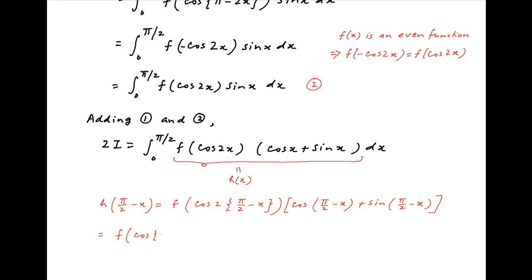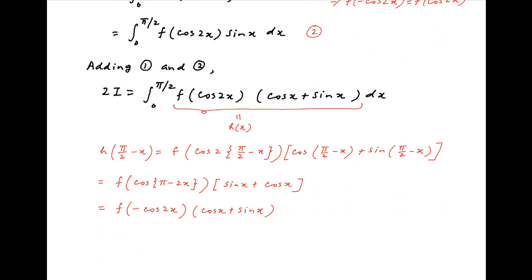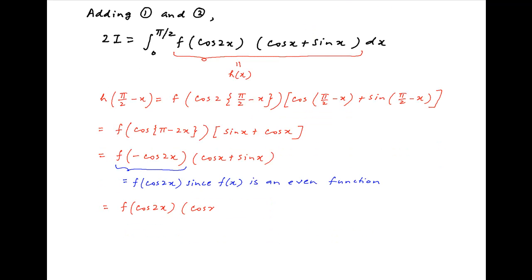Therefore h of (pi upon 2 minus x) is equal to f of cos(pi minus 2x) multiplied by (sin x plus cos x). Now cos of (pi minus 2x) is equal to minus cos 2x, so this simplifies to f(minus cos 2x) times (cos x plus sin x). Again since f(x) is an even function, f(minus cos 2x) equals f(cos 2x). Therefore h(pi upon 2 minus x) equals f(cos 2x)·(cos x plus sin x), which equals h(x).